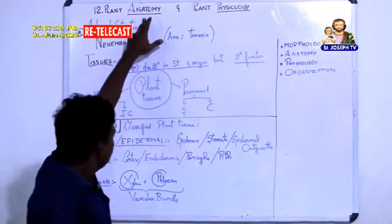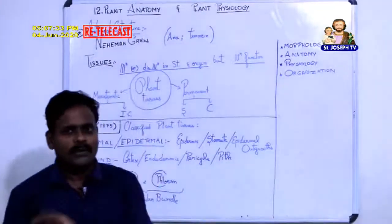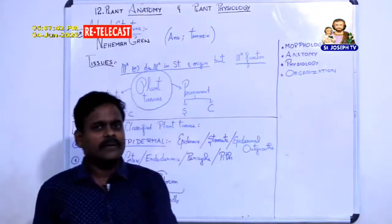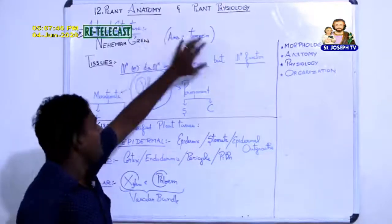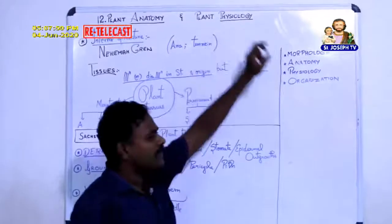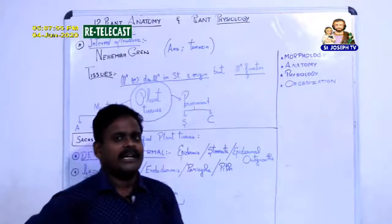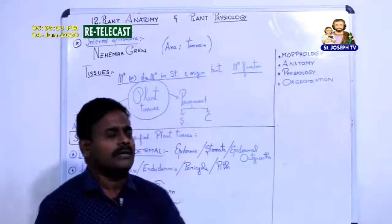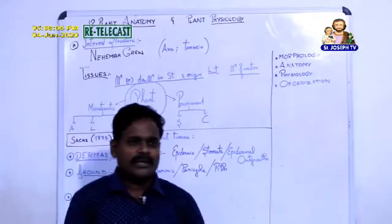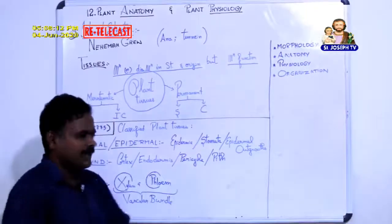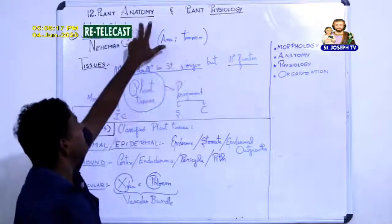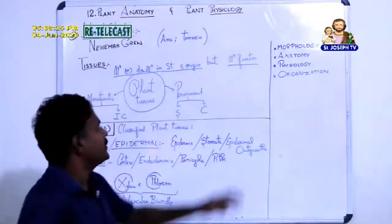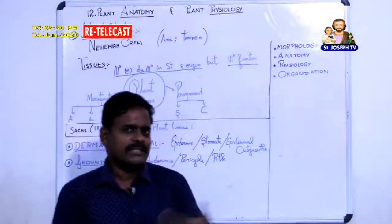In plant anatomy, you will study the internal structure of dicot root, monocot root, dicot stem, monocot stem, dicot leaf, and monocot leaf. That is the first part of this lesson. The second part is plant physiology, where you will learn two important functions of plants: photosynthesis and respiration. You will learn photosynthesis first, followed by respiration.